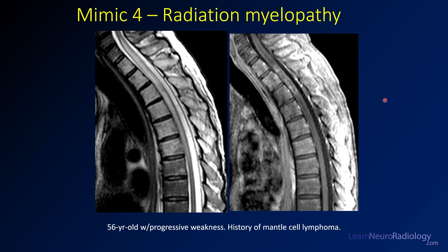The key additional history here was that this patient had prior irradiation of the upper thorax — the thymus and upper chest — and this area was within the radiation field. So this was radiation myelopathy, which was treated with steroids and improved. Always check the chart for additional history, especially in these unusual spine cases. That's a great pearl to take with you.